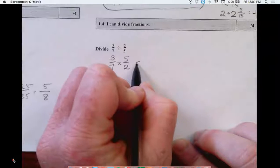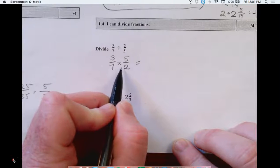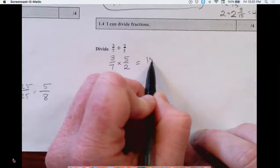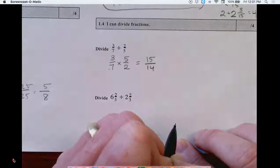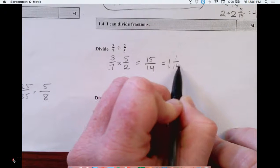So now this division problem became a multiplication problem, and we follow the same steps for multiplying. We're going to multiply the numerators, multiply the denominators, and I should probably convert this into a mixed number.